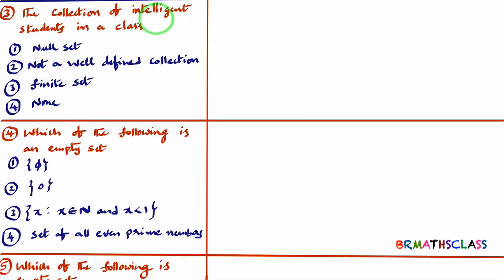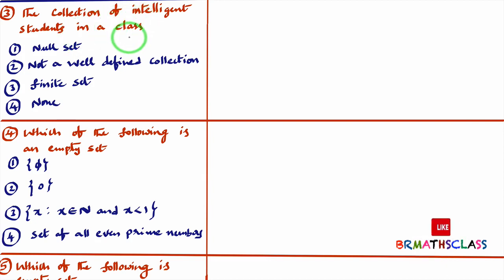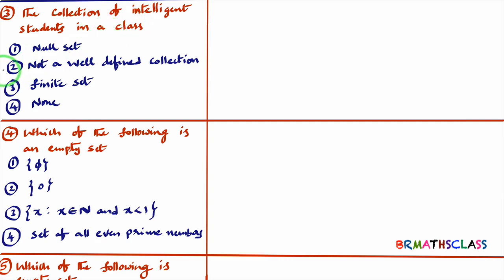The third question: collection of intelligent students in a class. How do you decide a student is intelligent? A student who scores well — is that student intelligent? Or a student who doesn't get good marks but answers very quickly in class — is that person intelligent? In what sense will you decide? A particular student may be good in math but not in other subjects. So intelligent student varies from teacher to teacher, person to person. Collection of intelligent students is not a well-defined collection.